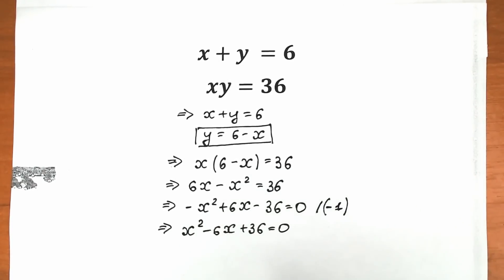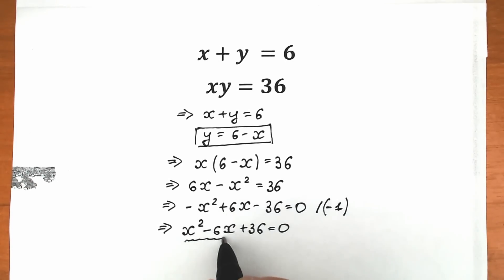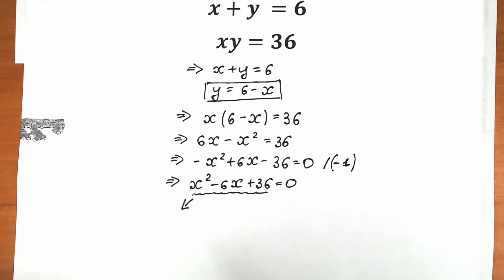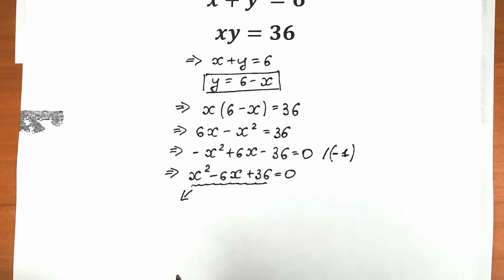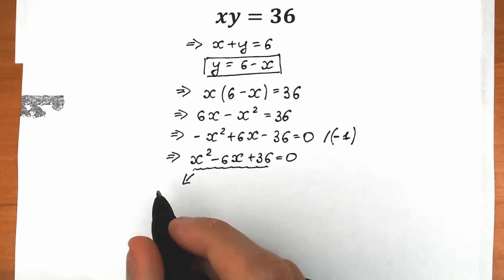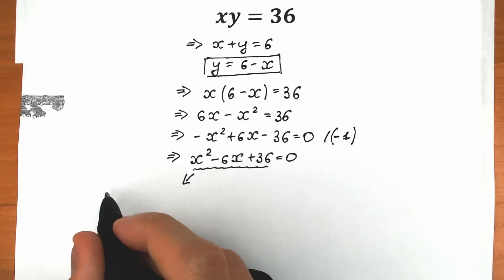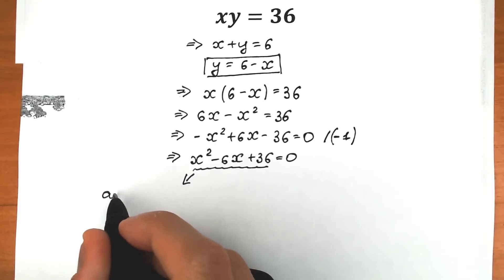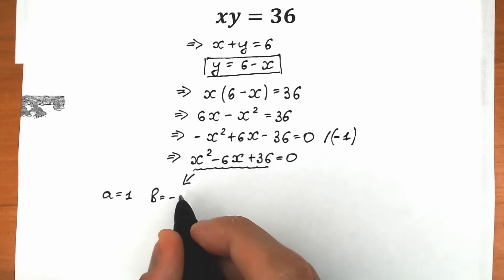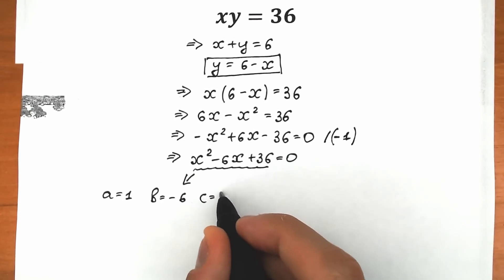Now I'm going to show you two approaches to solve this quadratic equation. The first one is more understandable for most people. Let's start from the left approach: find the discriminant. We write our coefficients: a equals 1, b equals minus 6, and c equals 36.